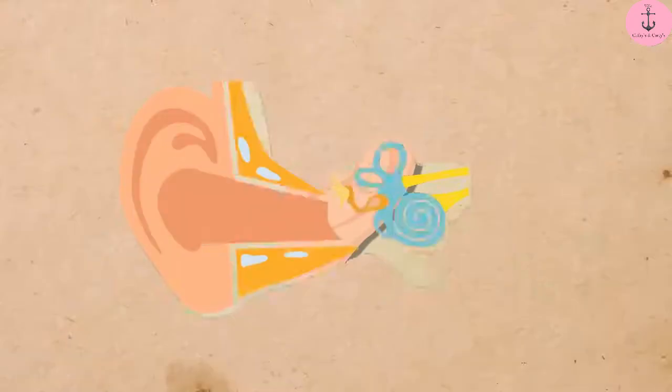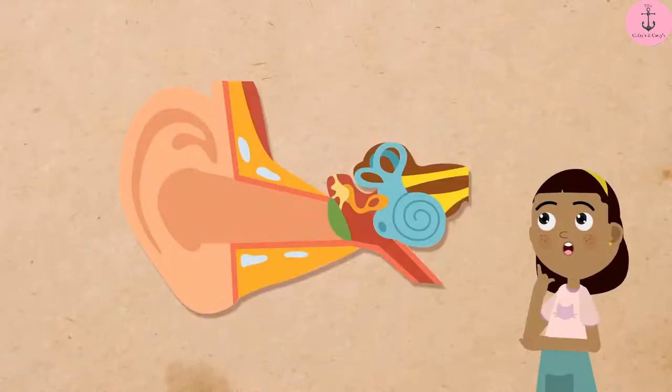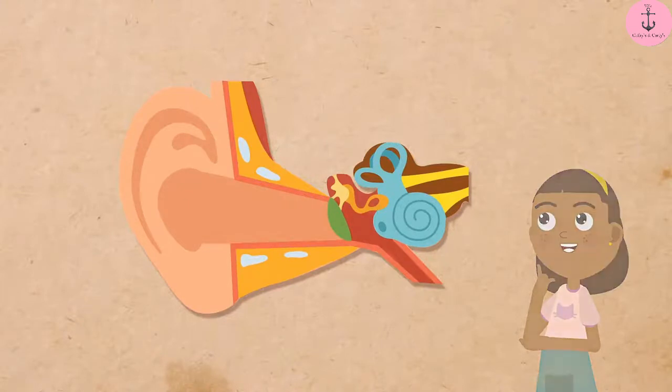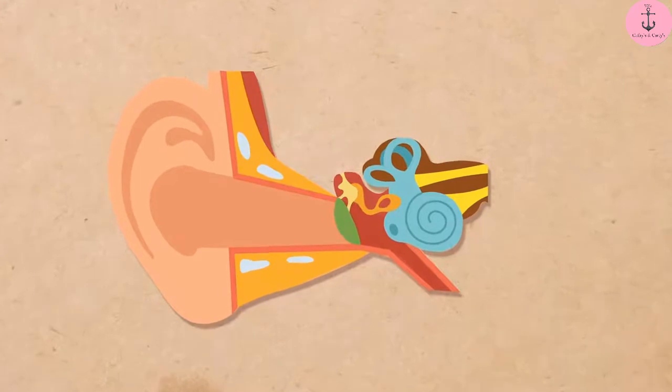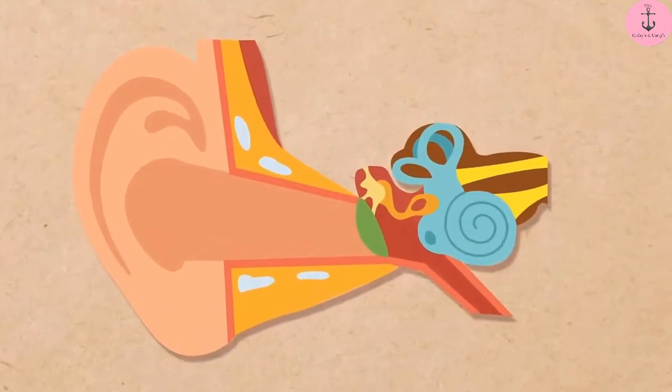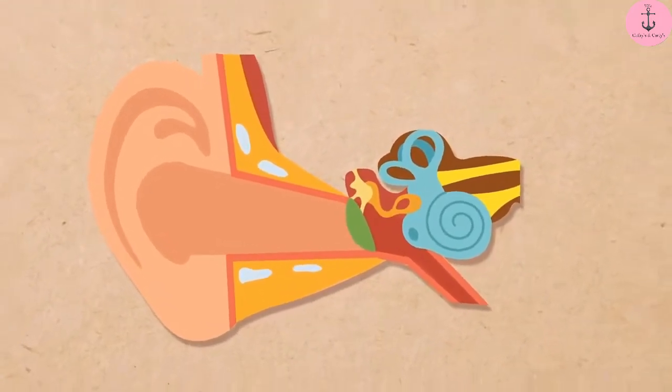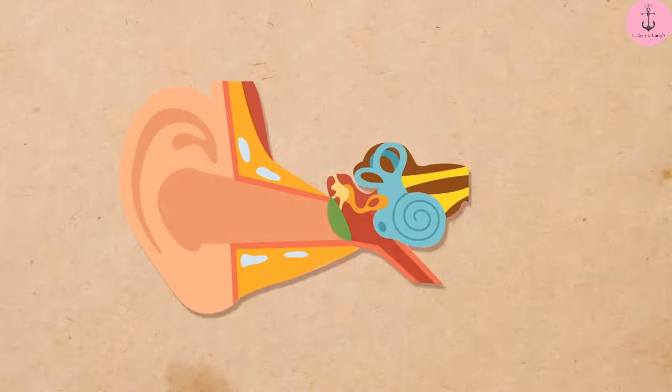Now, let us learn about the auditory parts of the human ear and understand how it functions. Look at this picture of the human ear. The human ear is mainly divided into three parts.